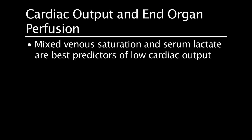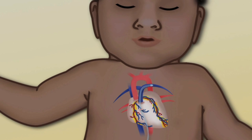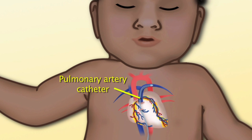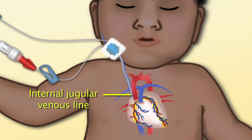Mixed venous saturation and serum lactate are the two best measures to predict low cardiac output. Mixed venous saturation is one of the first values to change and is an early indicator of myocardial dysfunction. Mixed venous saturation is 72 to 75 percent in normal two-ventricle physiology patients, and should not be more than 30 points lower than arterial oxygen saturation. In two-ventricle physiology patients, mixed venous saturation is best obtained from a pulmonary artery catheter; otherwise, it may be obtained from the internal jugular catheter.